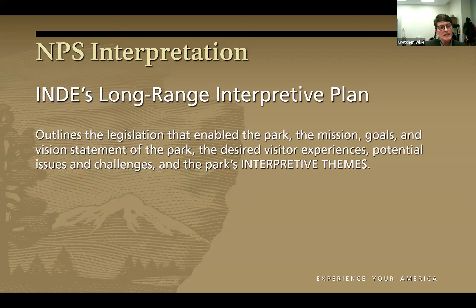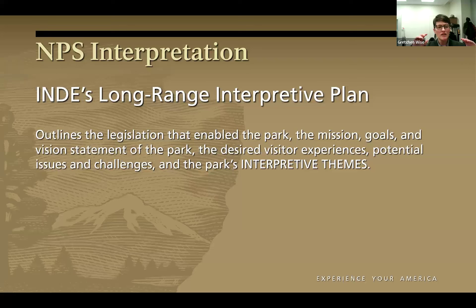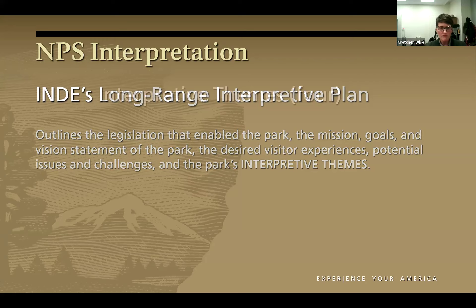The long-range interpretive plan is something every park has to create. It outlines why the park was created, who enabled it, the mission, goals, vision statement, and the park's interpretive themes — statements about the stories the park is going to tell and focus on. There are four themes total. They're very general, but you'll notice in all of them that the one thing you're super passionate about, there's room for it.